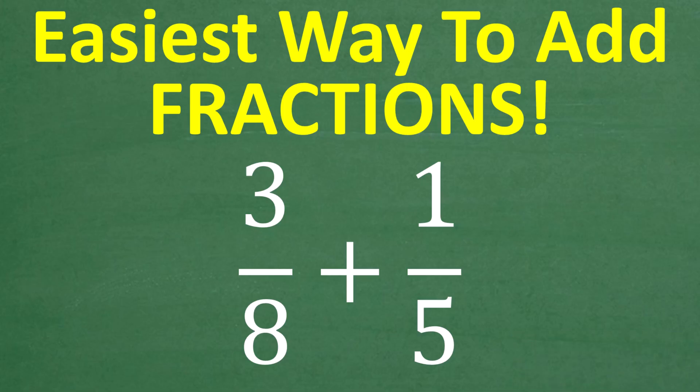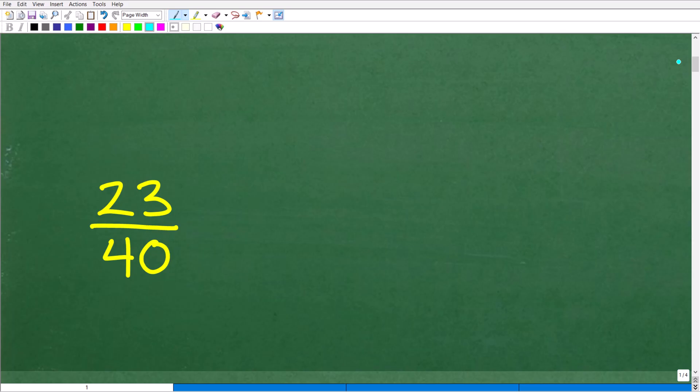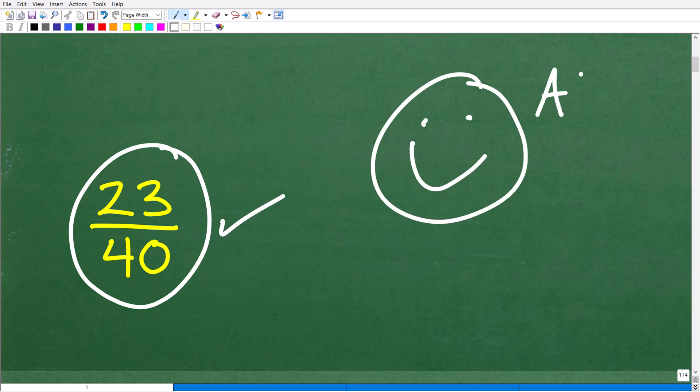Here we have three-eighths and we want to add it to one-fifth. Pretty straightforward problem. The answer is 23 over 40. If you got that right, that is fantastic. Let's celebrate by giving you a nice little happy face and a plus, 100 percent and multiple stars so you can brag to your friends and family that you know how to add fractions.